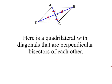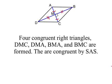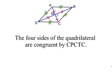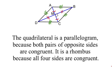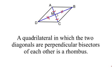Now we're given a quadrilateral with diagonals that are perpendicular bisectors of each other. You can see four congruent right triangles, congruent by side-angle-side. That gives us by corresponding parts that all four sides of the quadrilateral are congruent. The quadrilateral is a parallelogram because both pairs of opposite sides are congruent, and more than that it's a rhombus because all four sides are congruent. We've just proven that a quadrilateral in which the two diagonals are perpendicular bisectors of each other is a rhombus.